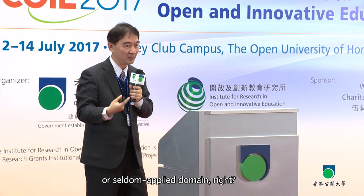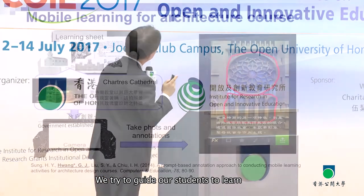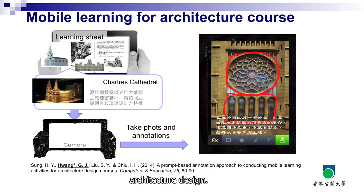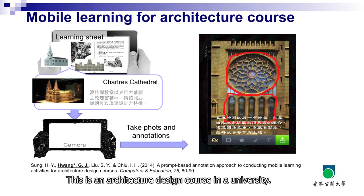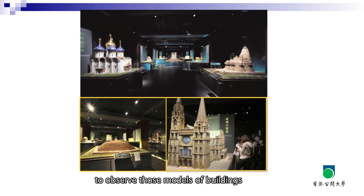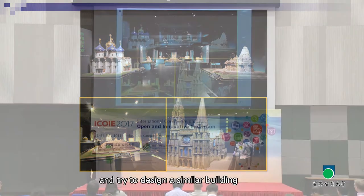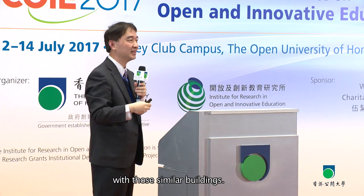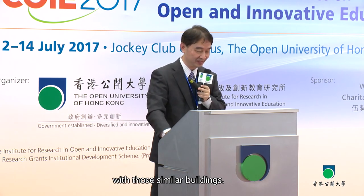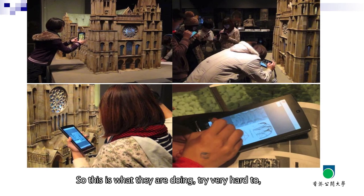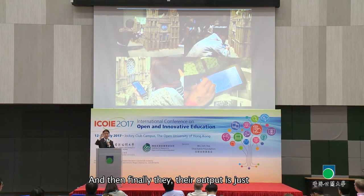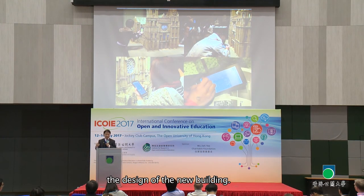Another example in a seldom-investigated domain is architectural design. Students use mobile technology to observe models of buildings and then design similar buildings. They take photos and take notes in the field, and the final output is a new building design.